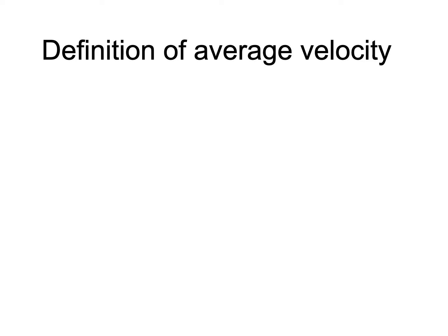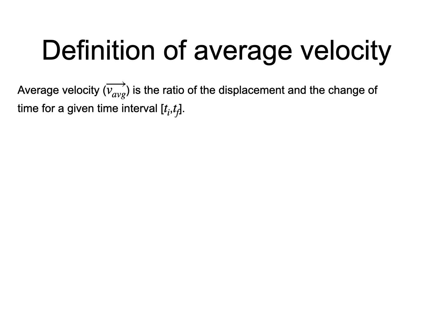We will first define it and then investigate what it means. The average velocity labeled v_avg is a physical quantity evaluated as the ratio of the displacement and the change of time over a particular time interval. This definition can be summarized with this mathematical expression.